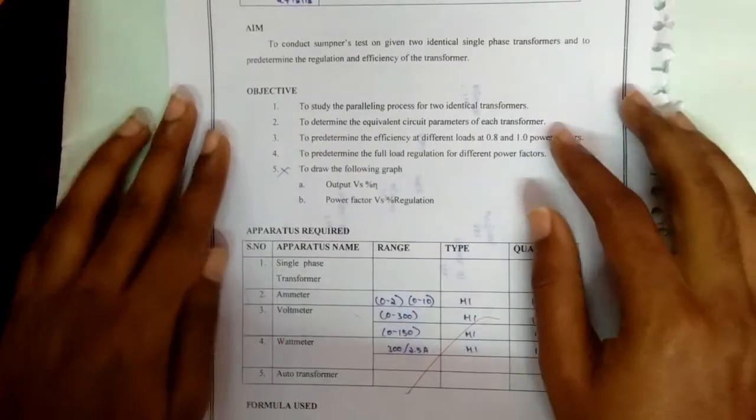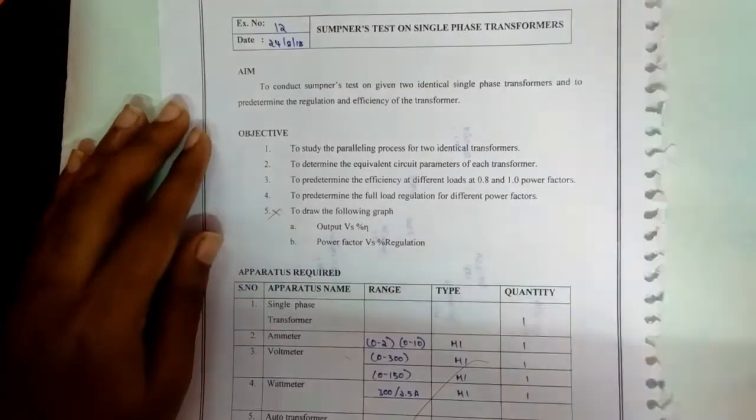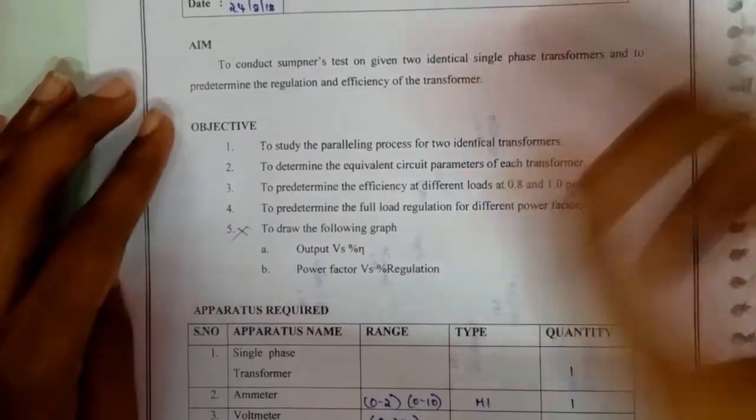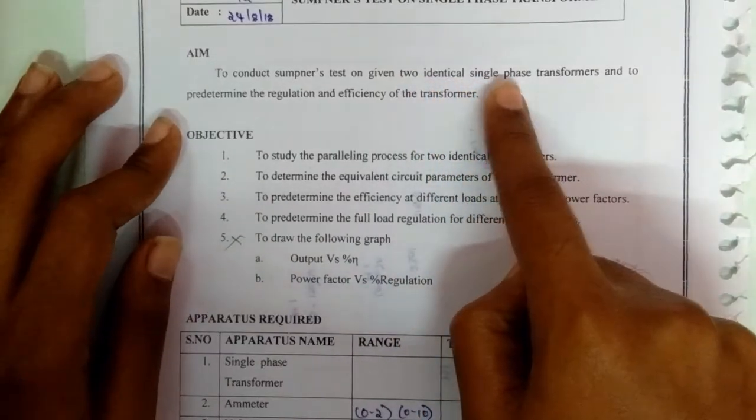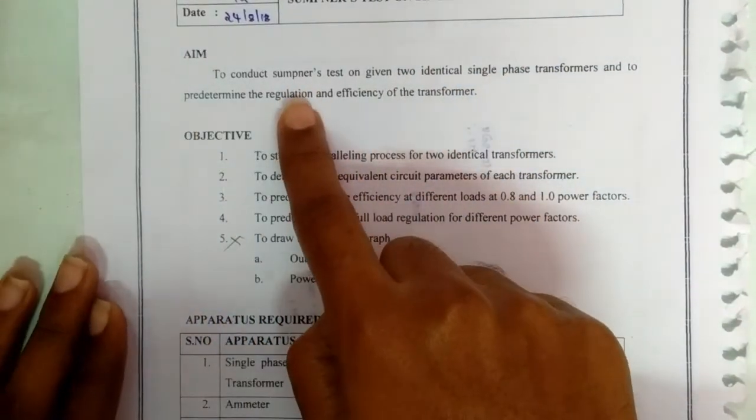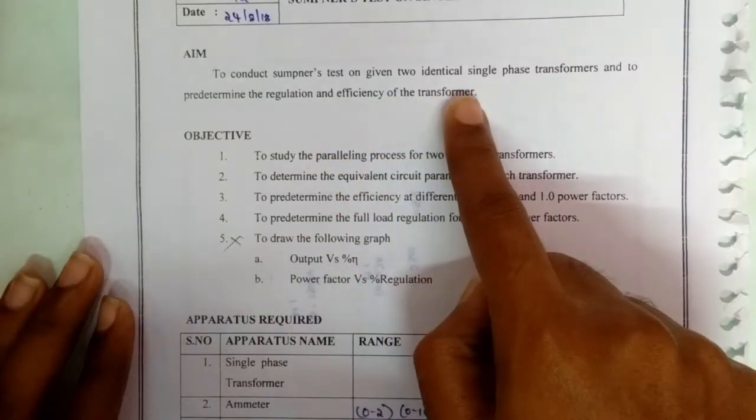The aim and objective of this experiment is to conduct Sumpner's test on given two identical single phase transformers and to predetermine the regulation and efficiency of the transformer.